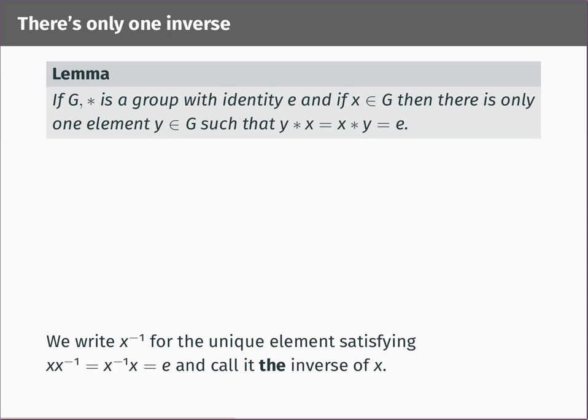We're now going to prove uniqueness of inverses. The inverse axiom said that for every element x in a group, there exists an element y such that x star y and y star x are equal to E. We're going to prove there's only one such element y. We suppose that yx equals xy equals E and zx equals xz equals E, and our job is to show that y equals z. We'll do this carefully using only the group axioms.